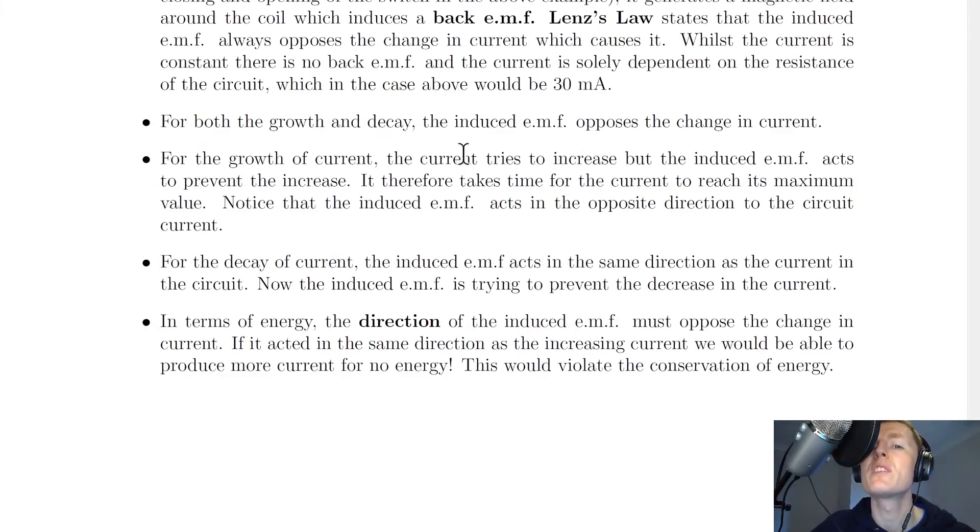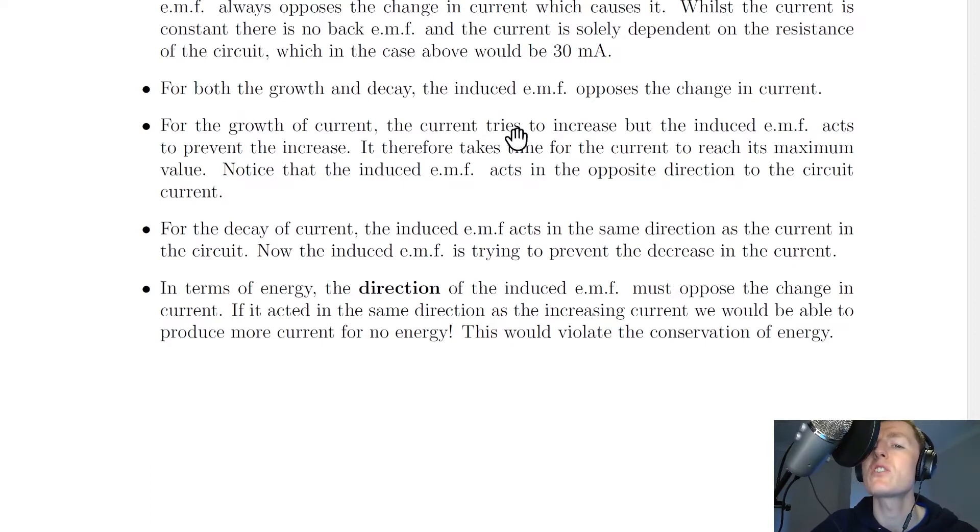For both the growth and decay, we say that the induced EMF opposes the change in current. So for the growth of current, the current tries to increase from zero, but the induced EMF will act to prevent this increase. It therefore takes time for the current to reach its maximum value. Notice that the induced EMF in this case will act in the opposite direction to the circuit current, and that's so that it can try and oppose it.